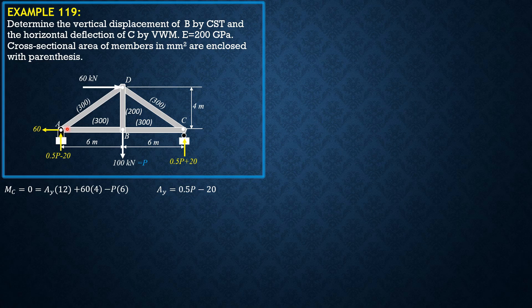So we begin at joint A. Let's assign the forces in tension just like in statics. The angle here is arctan of 4 over 6, that's 33.69 degrees. At A, summation forces Y equals 0, so SAD times sine 33.69 degrees plus 0.5P minus 20 equals 0.